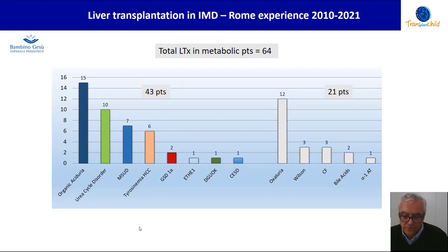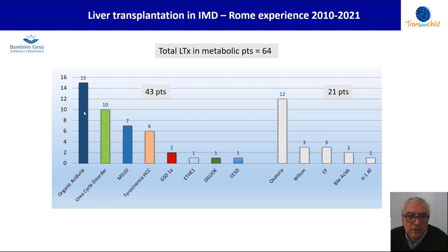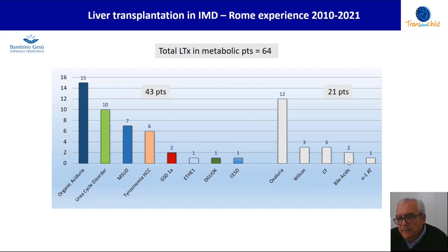I will now present our experience at the Bambino Gesù Children's Hospital with liver transplantation over the last 11 years. We started in 2010 and performed 64 liver transplants in patients with metabolic disease. I will focus on 43 patients including organic acidurias, urea cycle defects, MSUD, tyrosinemia, glycogen storage disease, and a few with mitochondrial or lysosomal diseases. The other 21 patients had oxaluria, Wilson disease, cystic fibrosis, bile acid disorders, or alpha-1 antitrypsin deficiency.